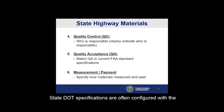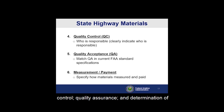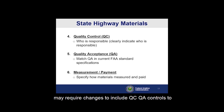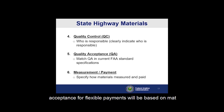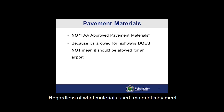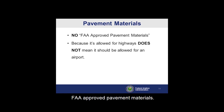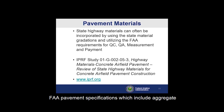State DOT specifications are often configured with the state as the project owner, with responsibility for quality control, quality assurance, and determination of quantities for measurement and payment. Quality control and quality assurance provisions may require changes to include QC/QA controls to match current FAA specifications. The consultant ensures the specifications include the critical items for acceptable materials. For example, acceptance for flexible pavements will be based on mat and joint density, air voids, smoothness, and grade. Regardless of what material is used, material may meet FAA specifications, but there is no such thing as FAA-approved pavement materials.